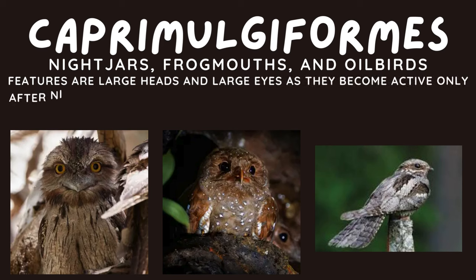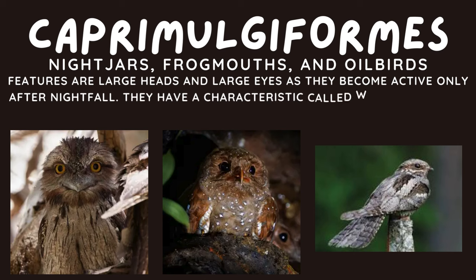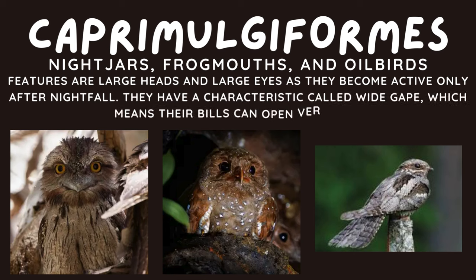Caprimulgiformes. These birds include nightjars, frogmouths, and oilbirds. Their features include large heads and large eyes, as they become active only after nightfall. They have a characteristic called wide gape, which means their bills can open very wide.